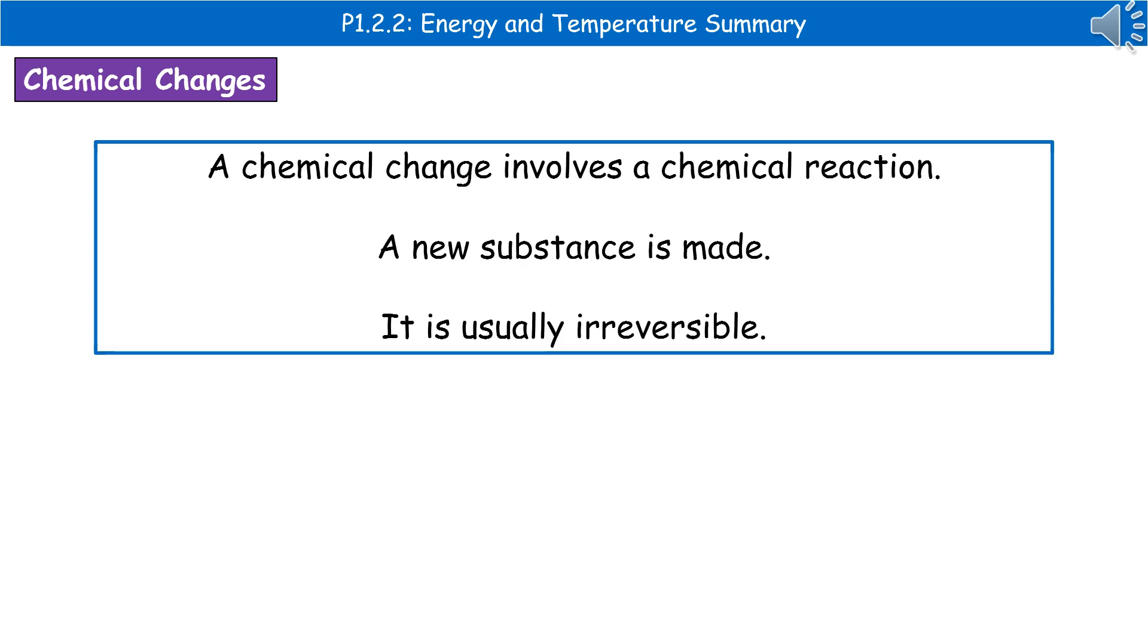A chemical change involves a chemical reaction. What we see in a chemical change is that the atoms within the original reactants become rearranged to make new products. So we're making a new substance—one of the key characteristics of a chemical change. Chemical changes are usually irreversible. Once you've undergone a chemical change, it's not likely that you can change it back. There are certain times that we can, but usually they're irreversible.